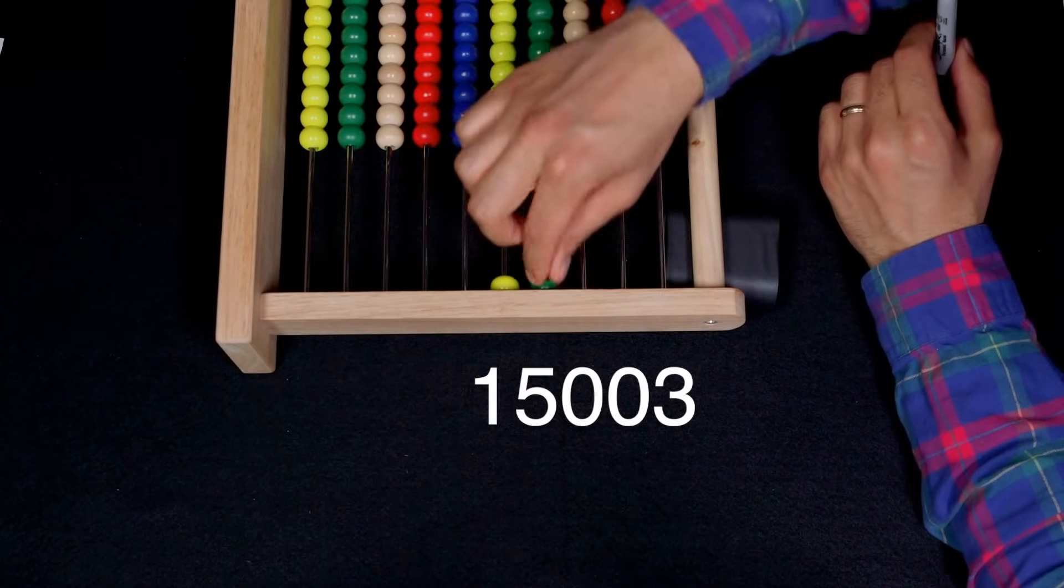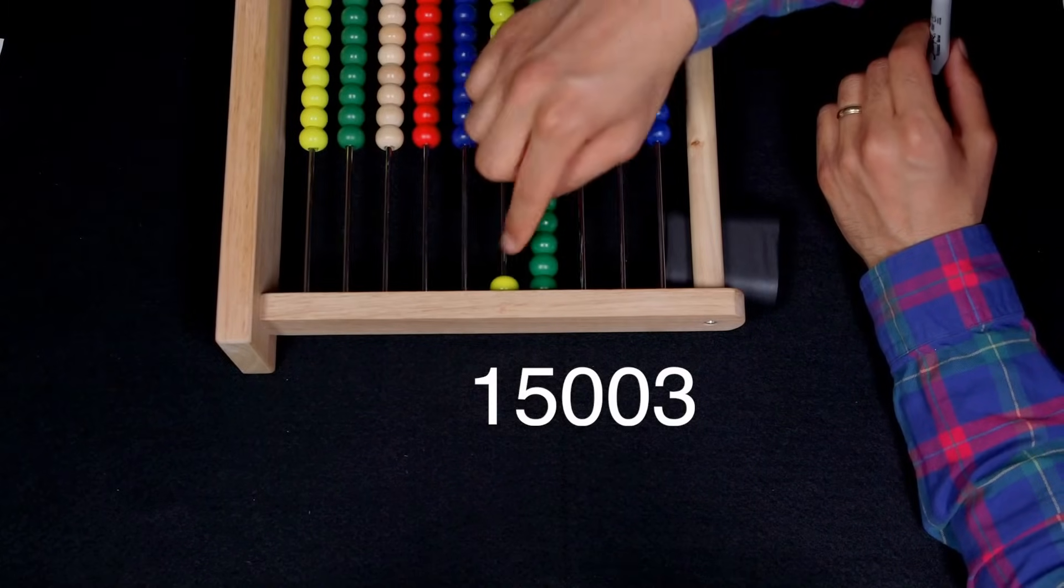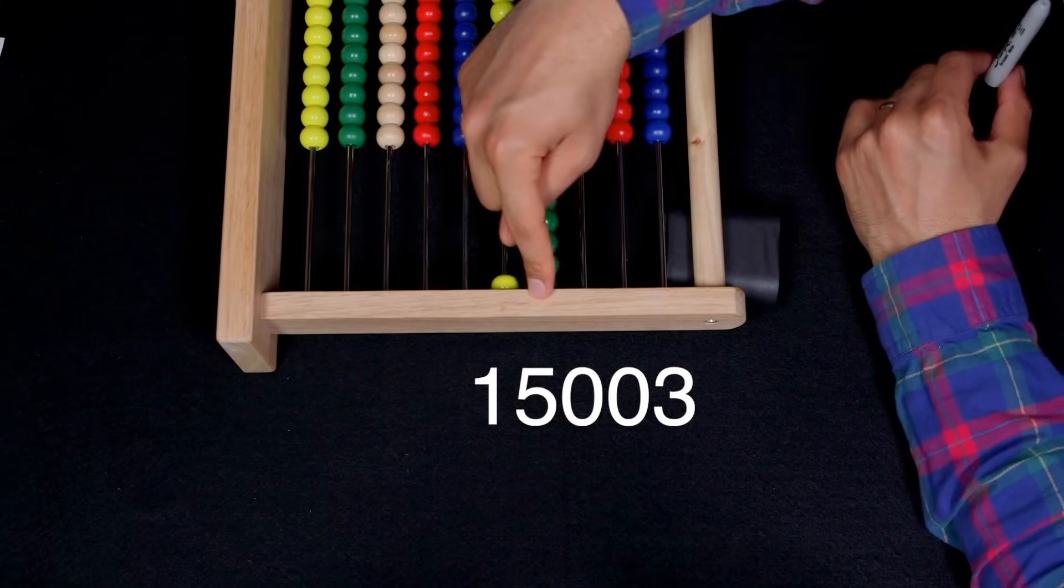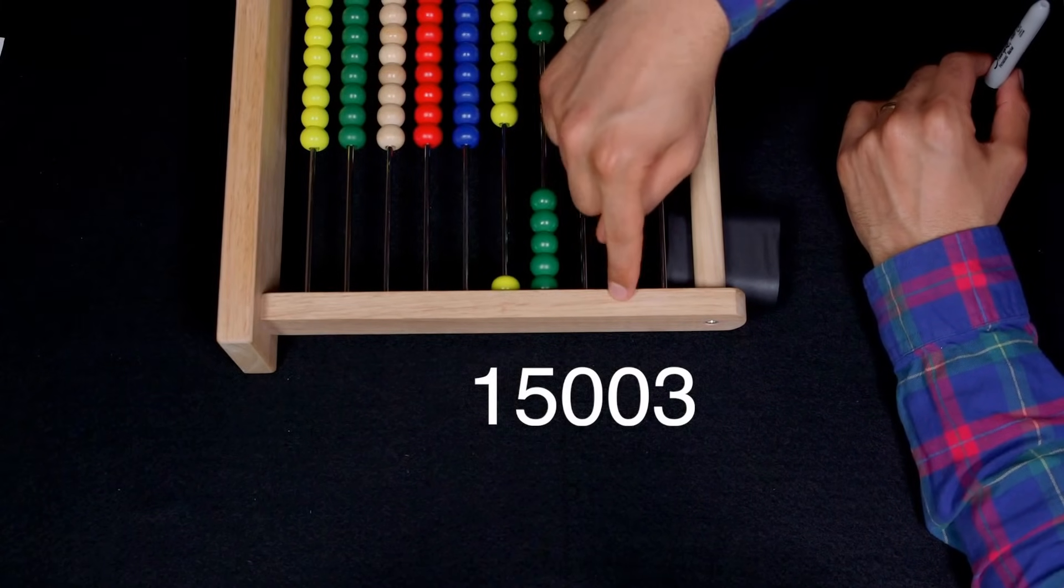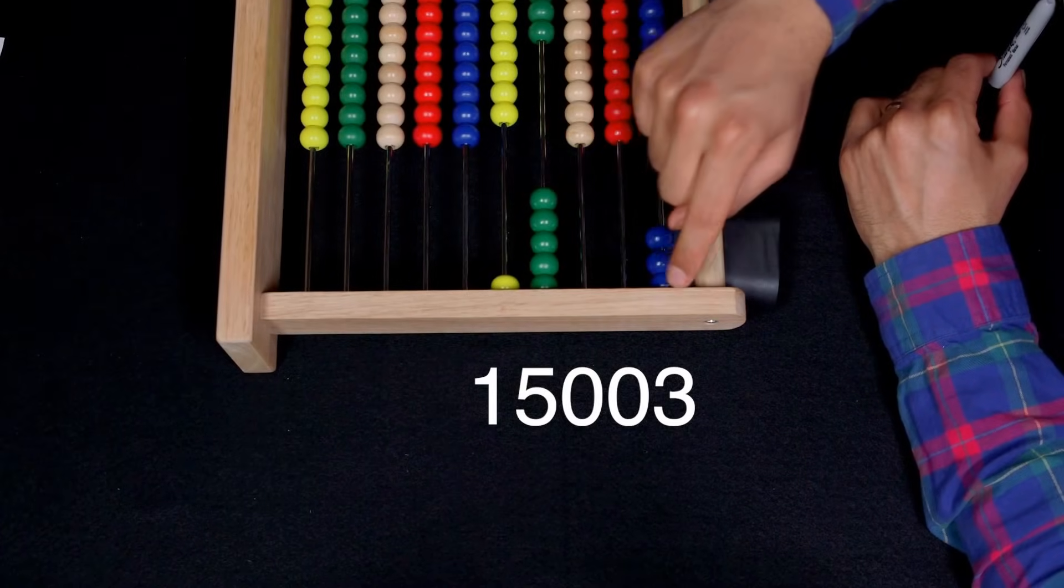And then I could do 5,000. One, two, three, four, five. So this is 15,000. So one 10,000, five thousands, then zero hundreds, zero tens, and then throw a three there. So 15,003.